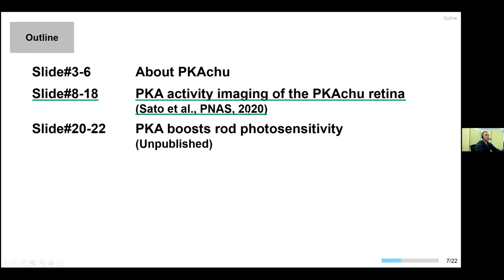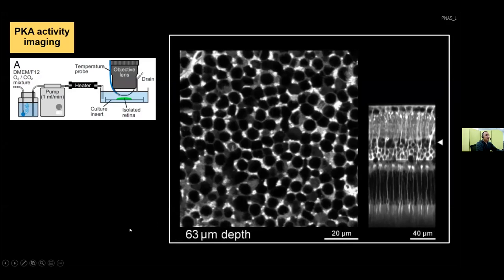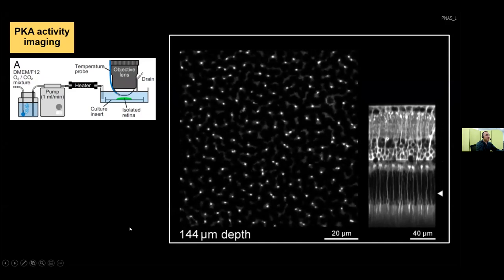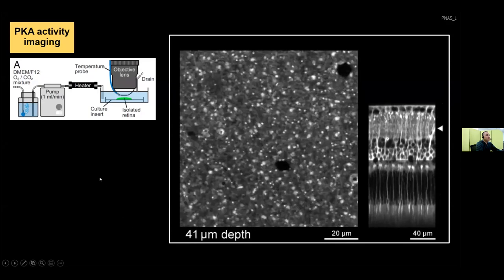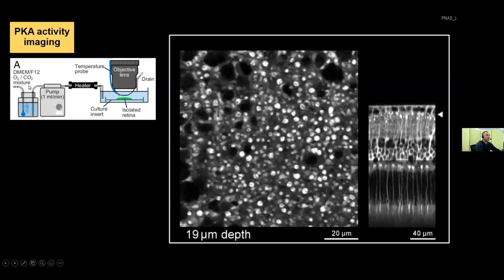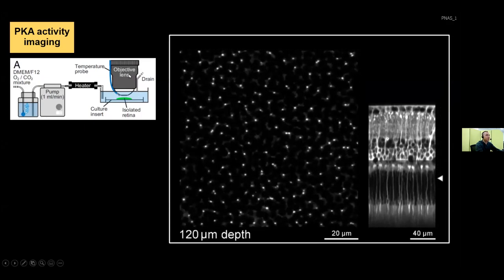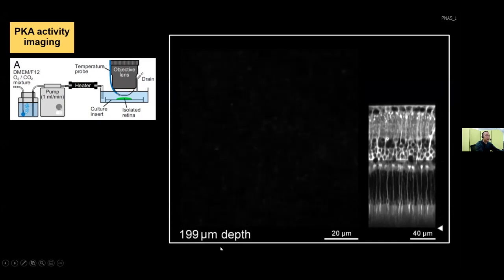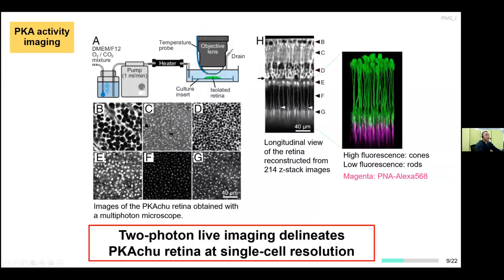This video is my favorite data: the Z-stack imaging of the Pikachu retina by two-photon microscope. The Pikachu retina was isolated and flat-mounted on a culture insert, perfused with fresh warm DMEM/F-12 oxygenated medium — similar to electrophysiological experiments — and I put the two-photon objective lens and moved it downwards with one-micrometer intervals. I obtained single-cell resolution images from the surface ganglion cell layer to the photoreceptor segment layer. Cell nuclei are shown as black spheres because the biosensor has a nuclear exporting signal peptide.